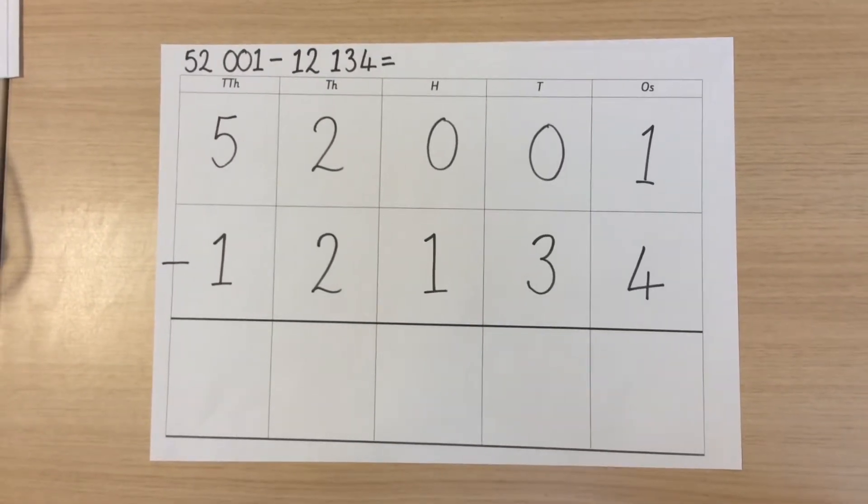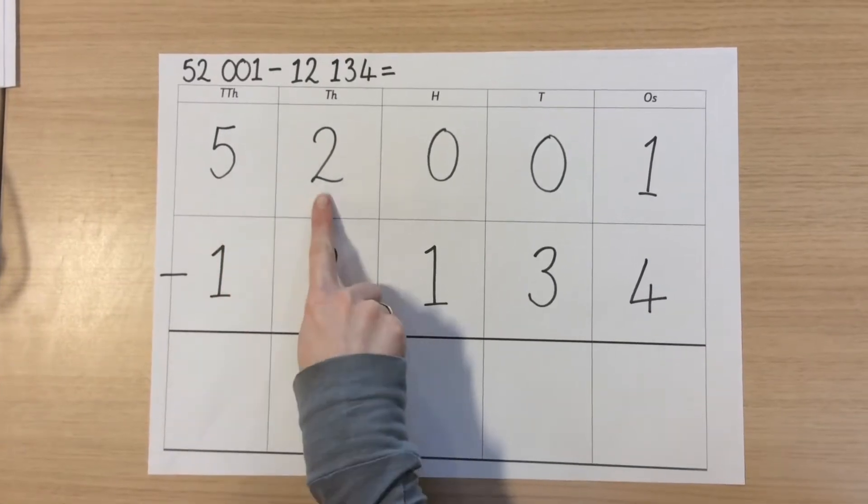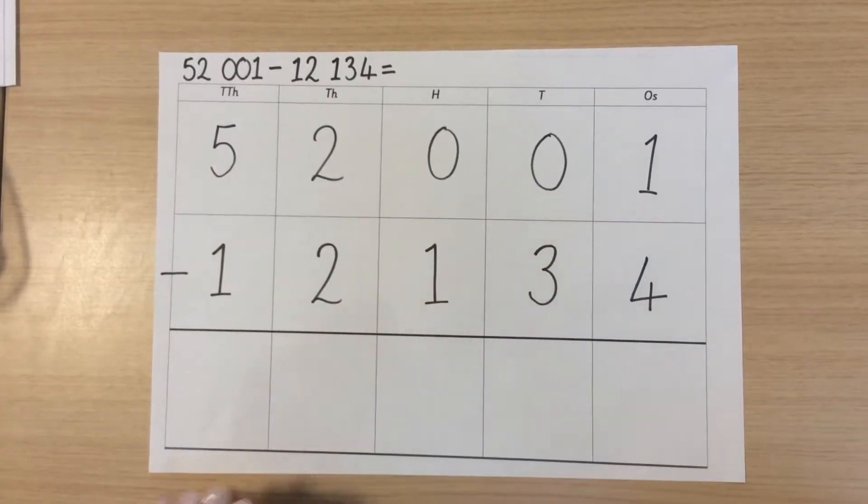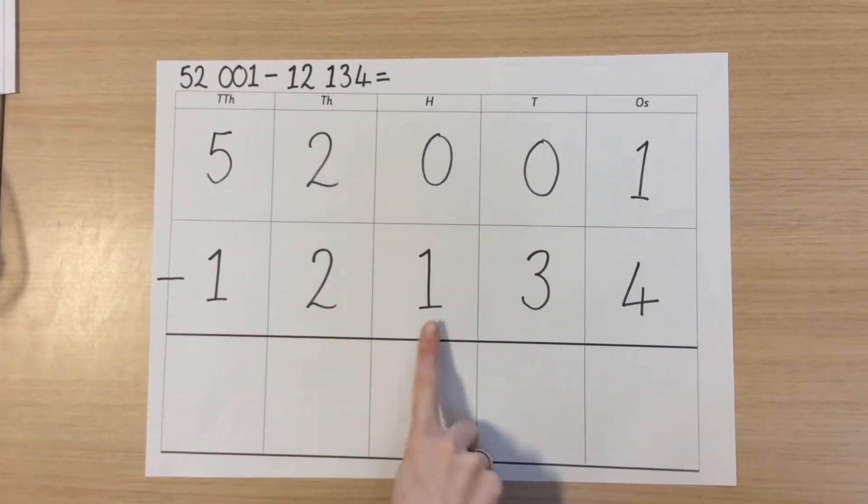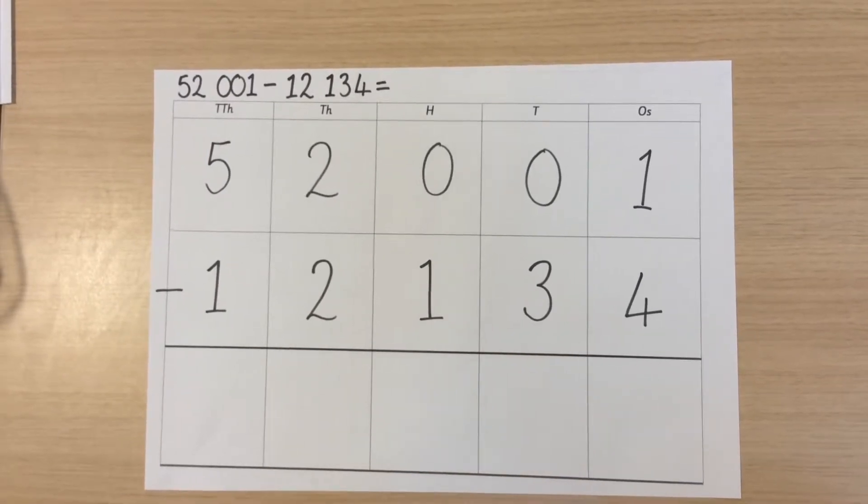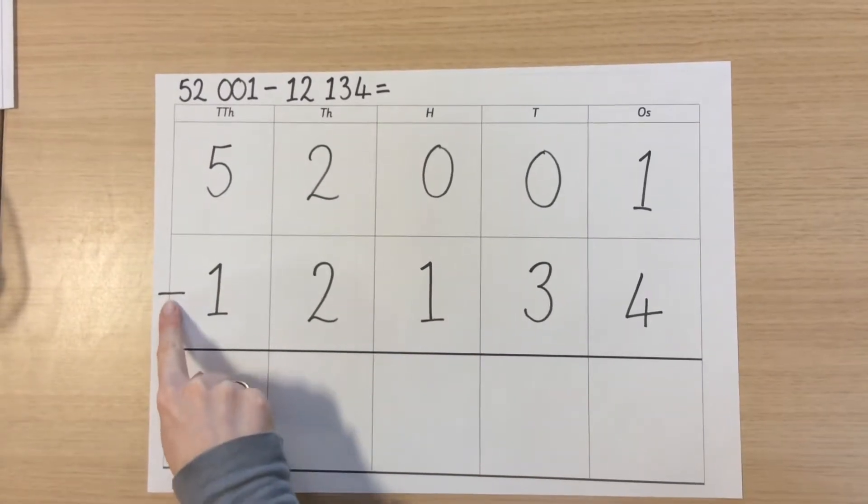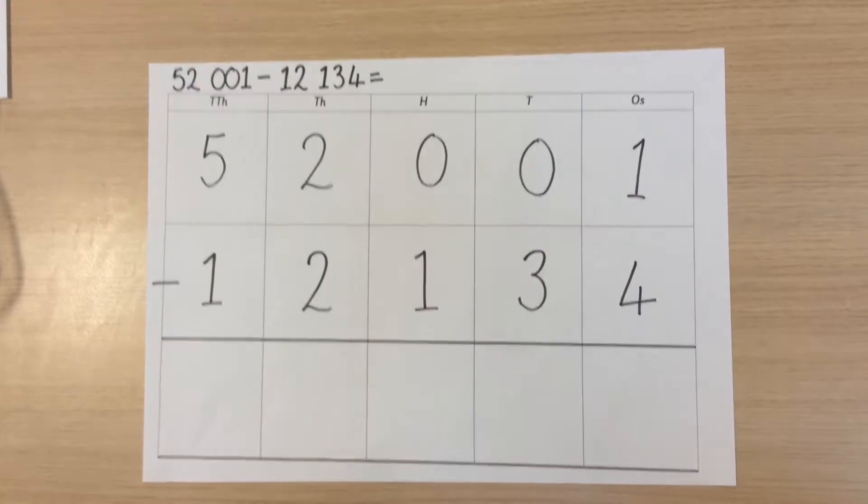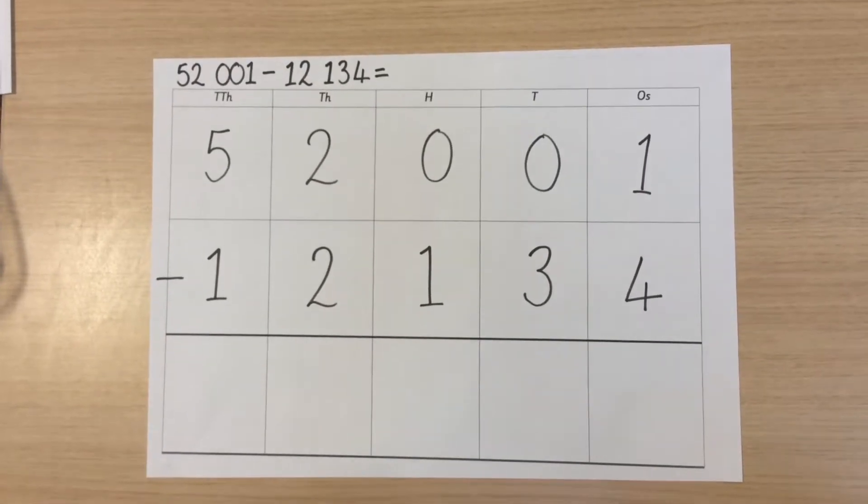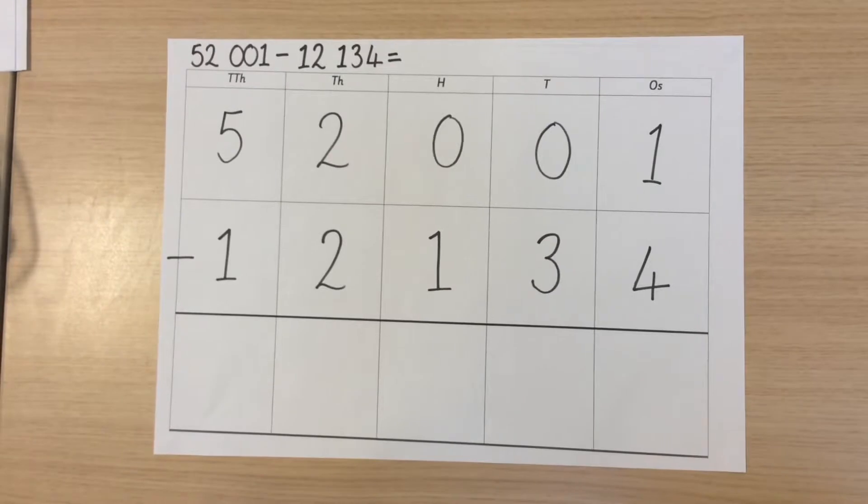As you can see we've already written out the numbers 52,001 and 12,134. We need to ensure that we have our subtraction operation shown clearly on the left hand side of the calculation. We now need to ensure we have laid out our counters.